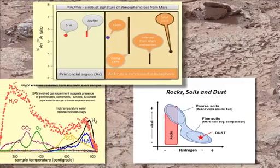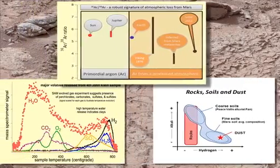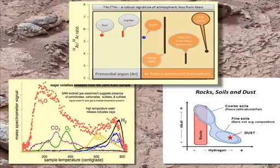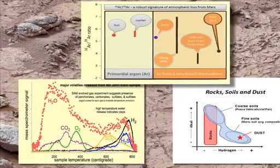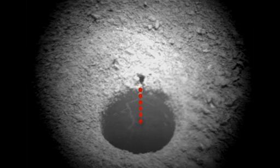Curiosity's science team reported their progress in unraveling the different chemical compositions of rocks, soil, and dust. The ChemCam team fired a series of laser shots right down the side of the drill hole, revealing how composition changes with depth.